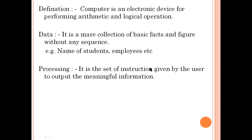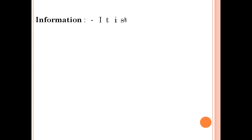Processing is the set of instructions given by the user to produce meaningful information. Whenever you put input into the computer, there will be processing. You type a number or letters using the keyboard, and the result comes out. The computer uses binary language — zeros and ones — so whenever you type something, processing is done in the system.